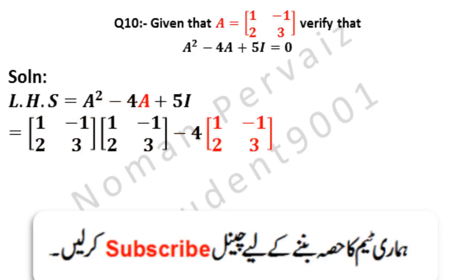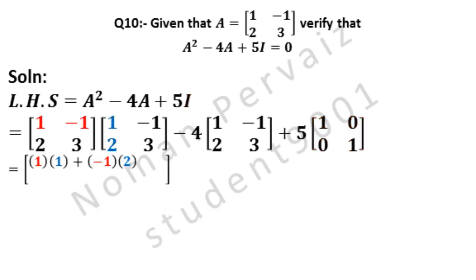Minus 4 comes as it is. Here we replace A with its value as given in the question above. Plus 5 comes as it is. Here I means identity matrix, which is the matrix having elements 1, 0, 0 and 1. Here we have to multiply these two matrices.